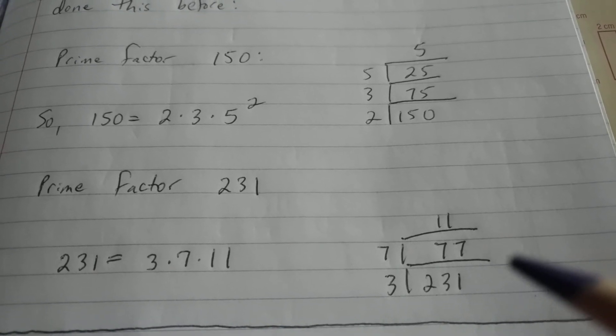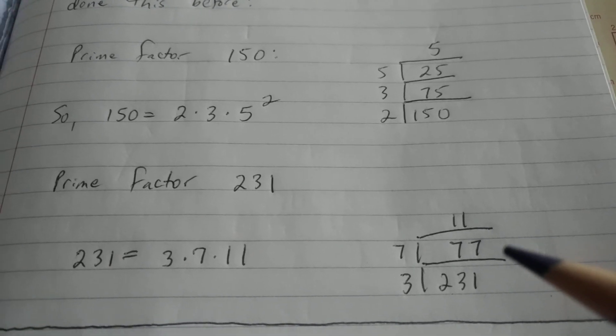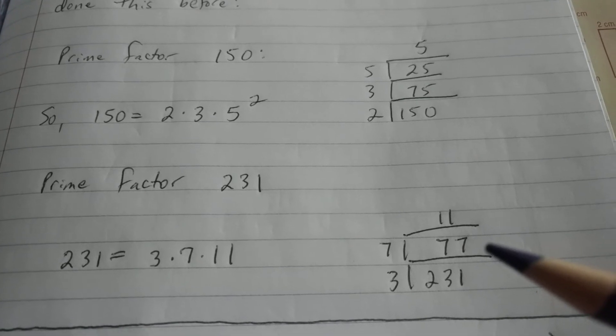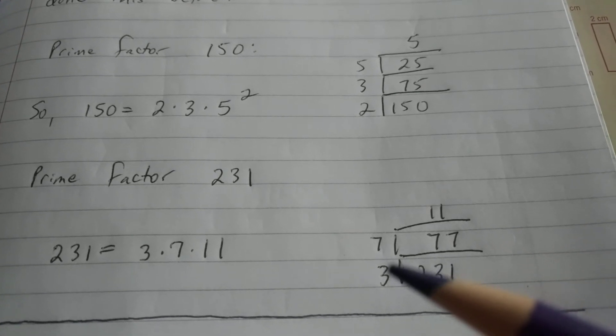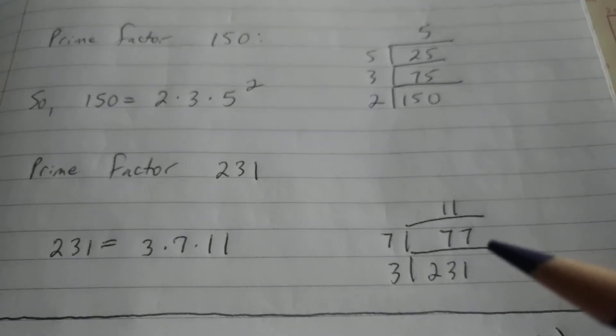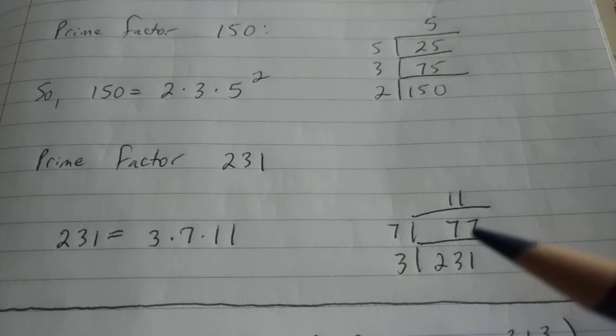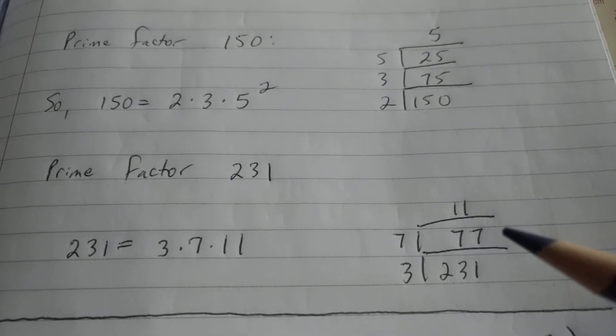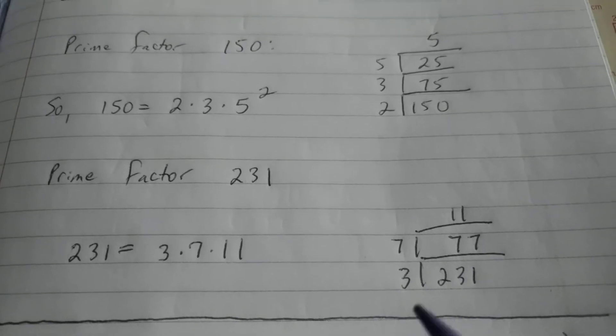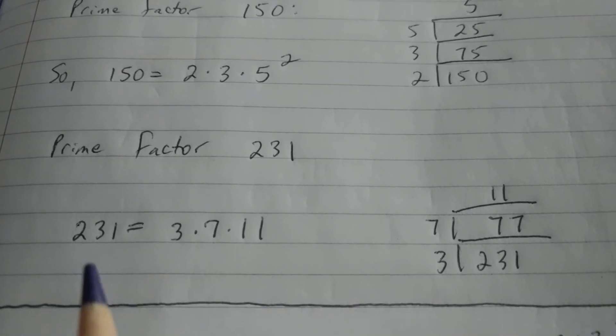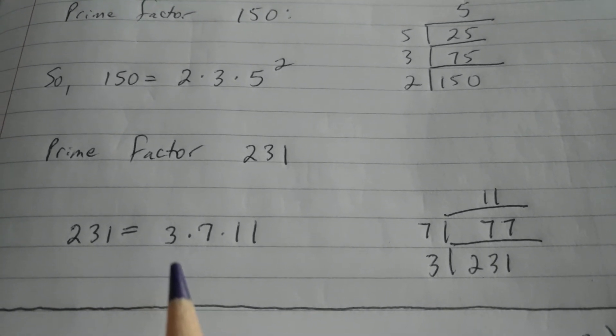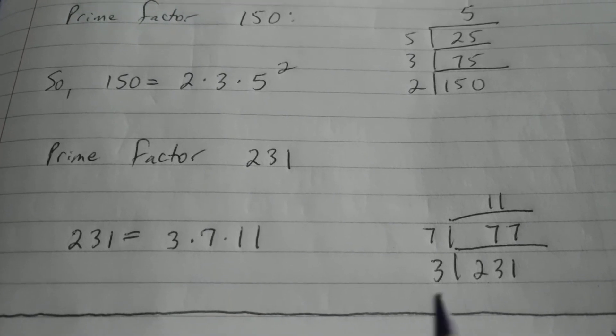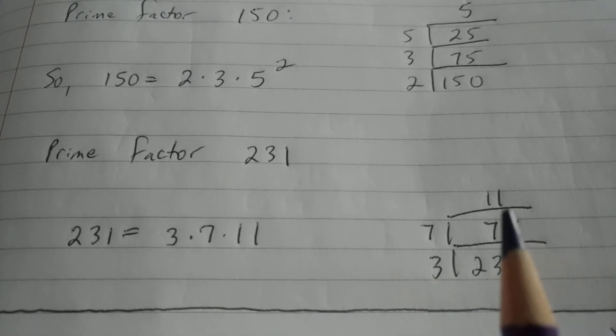7 plus 7 is 14, so 3 is not going to work here. But we can clearly see the 7's involved. 7 is the next prime divisor that we're going to use, because 5 won't work. 7 divides 77, 11 times. So here's our conclusion here, 231 is equal to 3 times 7 times 11.